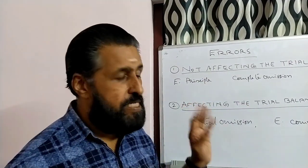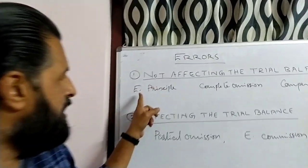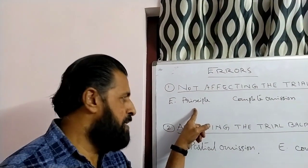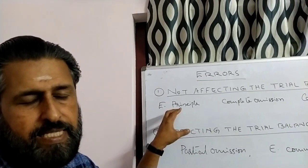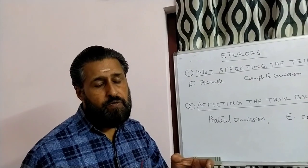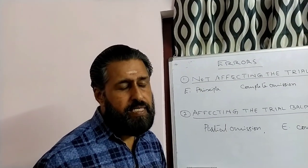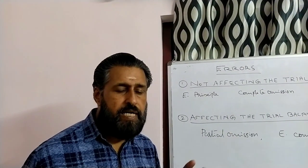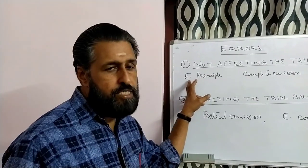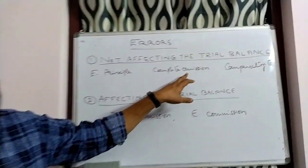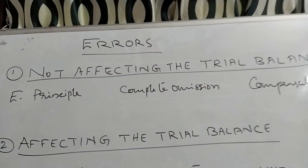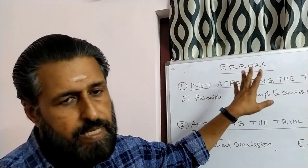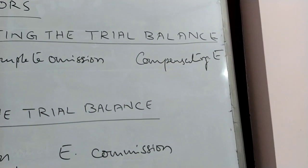Errors of principle, complete omission, and compensating errors do not affect the agreement of the trial balance — they are not disclosed by it. These errors are based on violations of accounting principles or complete omission of transactions, and since both debit and credit sides are equally affected, the trial balance still agrees.